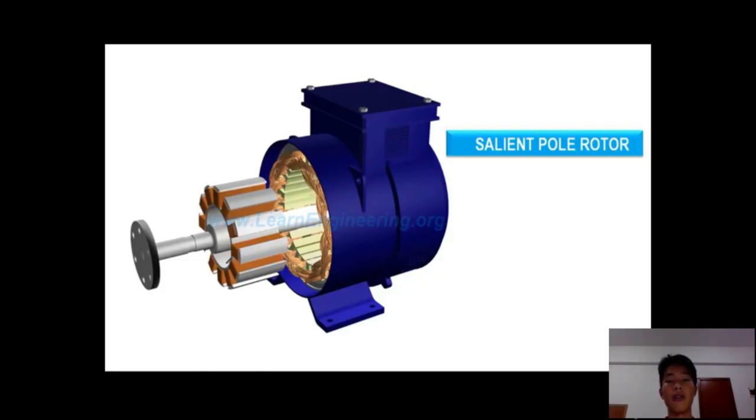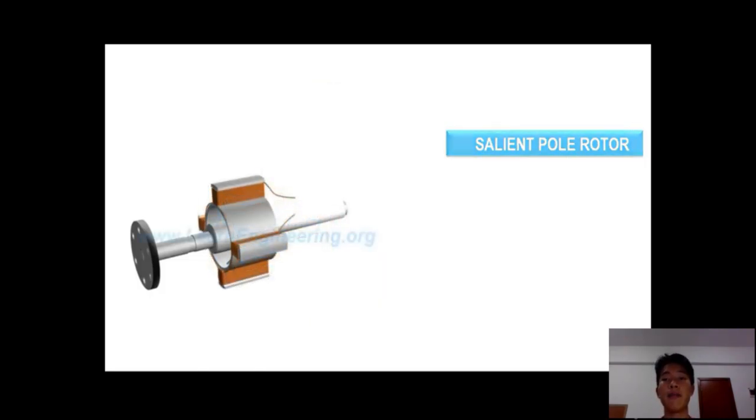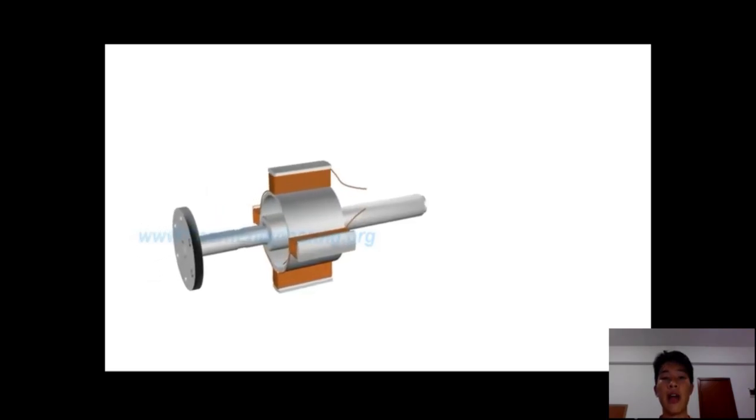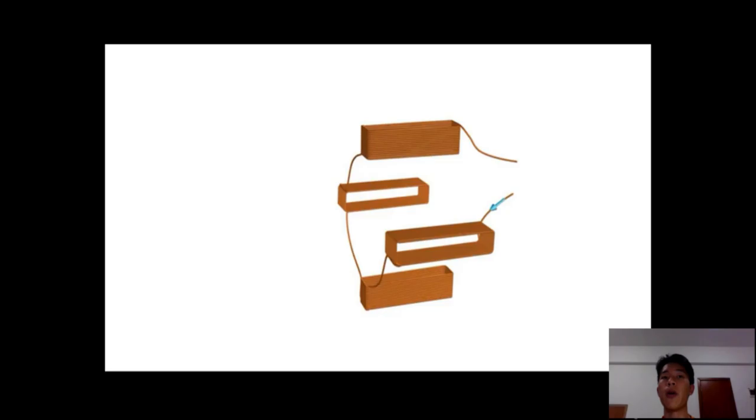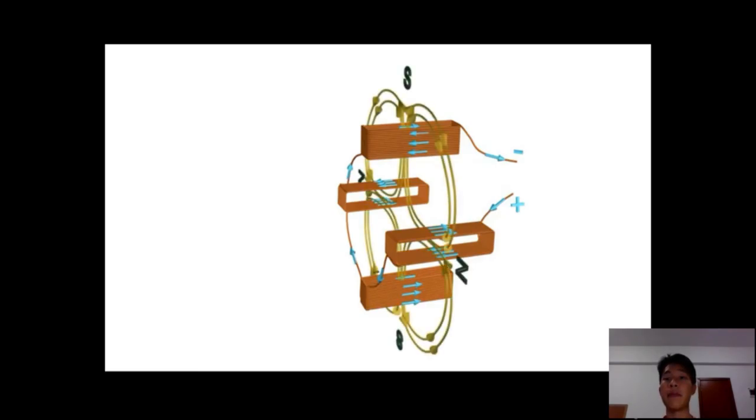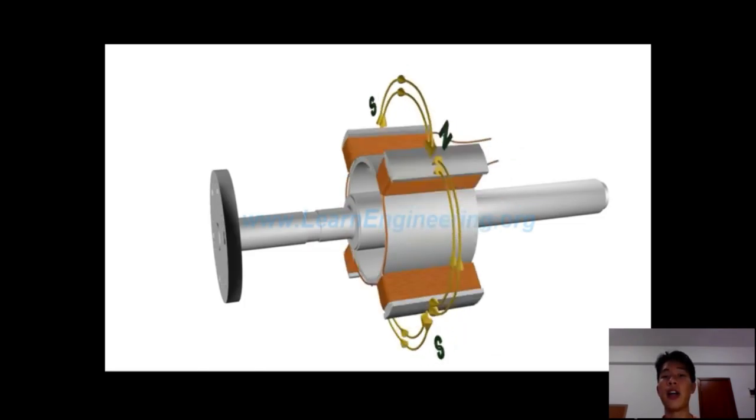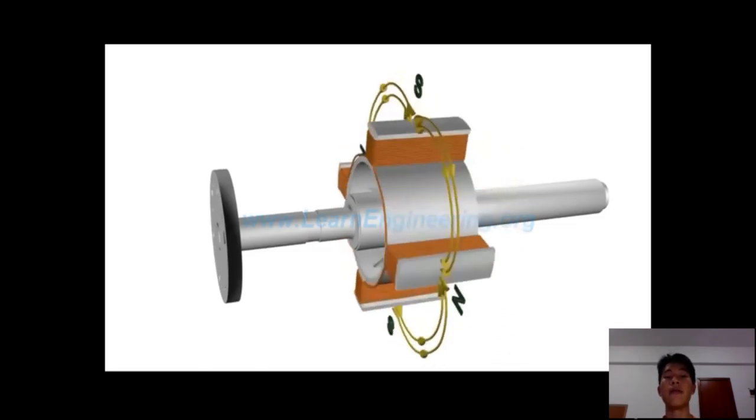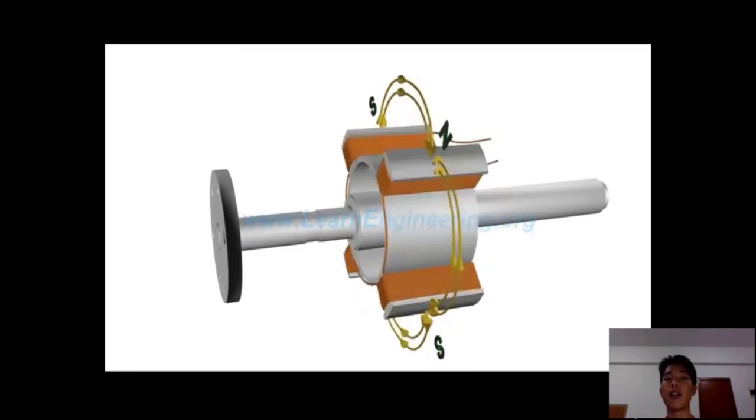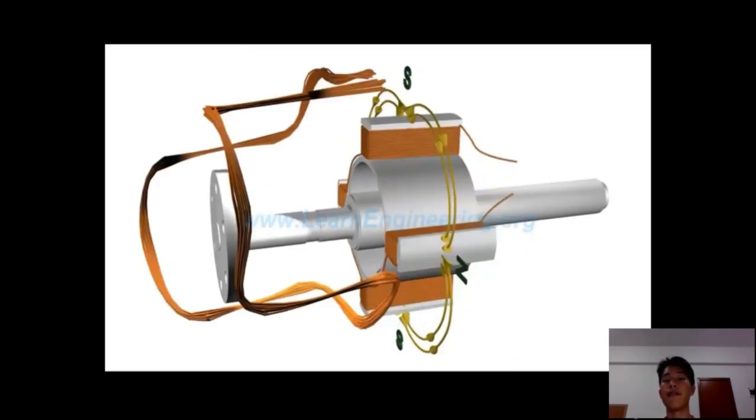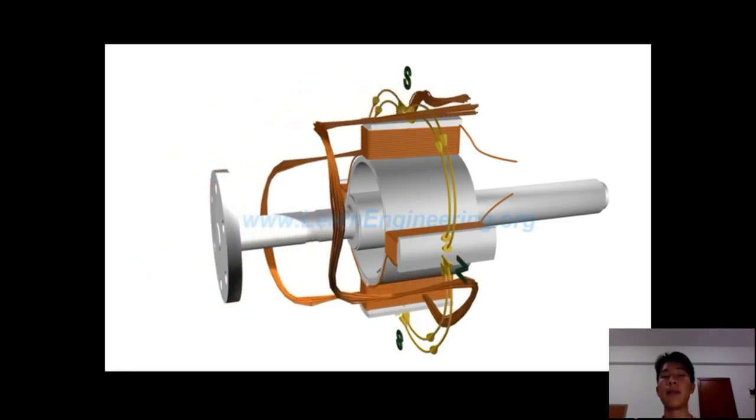This kind of rotor shown here is not a salient pole rotor. For getting better insight of its working, let's consider a rotor with just four poles. We can see, the rotor coils are excited with a DC power source. Magnetic flux produced around it will be as shown. The rotor is made to rotate by a prime mover. This makes the rotor flux also rotate along with it, at the same speed.